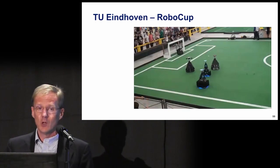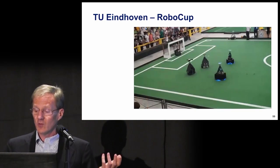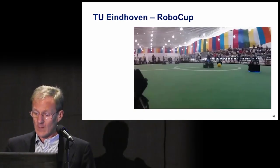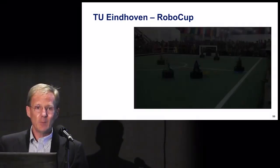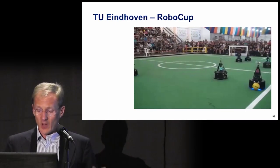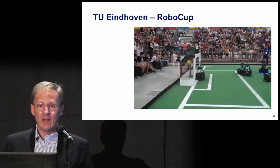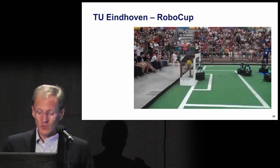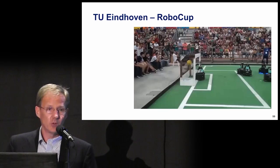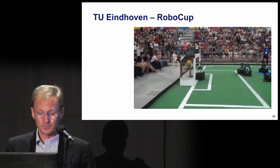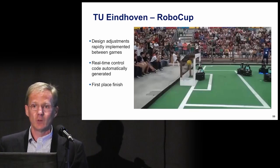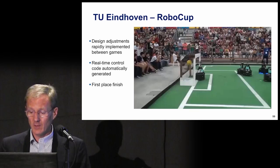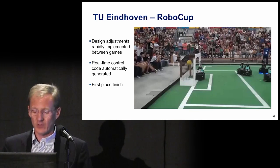RoboCup is a robotics competition whose goal by 2050 is to beat a human soccer team from the World Cup. Here's the TU Eindhoven team in the middle-sized division — an amazing controls problem using controls, vision, autonomous systems, collaborative systems, and strategy. This is done by students using model-based design tools. The team has advantages with model-based design because they can do design adjustments between games — they can even regenerate the controls code right in between games. The Eindhoven team is particularly good and has had a series of top finishes over the last several years.